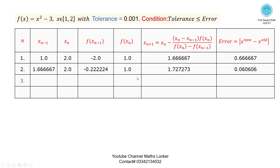Third iteration: use the new x value as x_{n-1}, x_n remains the same. Put this value in the function, then simplify it. Put 2 here and simplify. Substituting these values in the formula, get the result x_{n+1}. Take the difference for the error. Check: 0.001 is less than 0.004435. Condition is true — proceed to the next iteration.